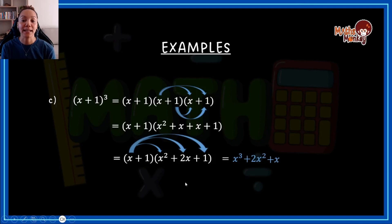x squared plus 2x plus 1. And that then, if I look at my like terms here, I've got x to the power 3, which cannot be further simplified. These two are like terms, so I add them together, which gives me 3. These are like terms. I add them together, which gives me 3. And then I add the plus 1.